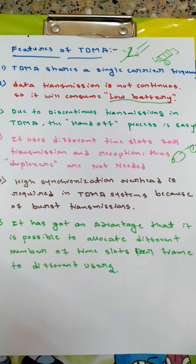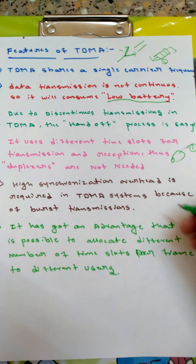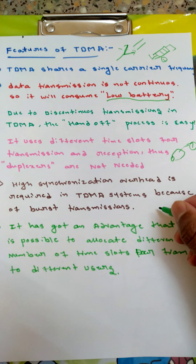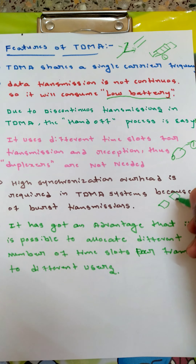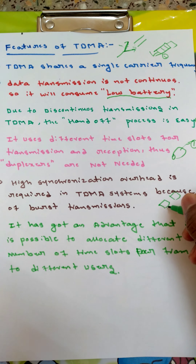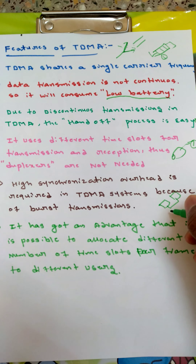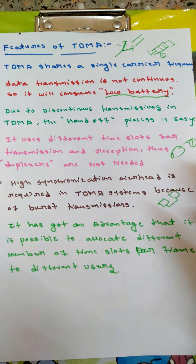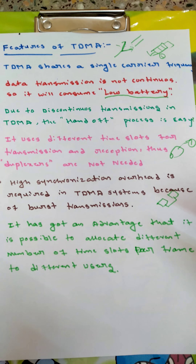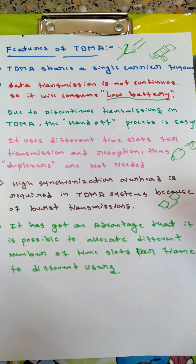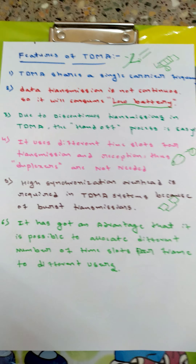The fifth feature is that high synchronization overhead is required in TDMA systems because of burst transmission. It is important to synchronize the different frames. The synchronization time is high because the frames are transmitted in a very short time period.